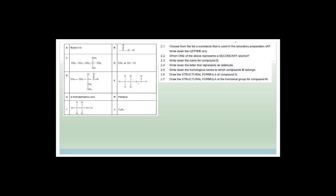Choose from the list a substance that is used in the preparation of F. Write down only the letter. F is an ester — there are two carbons, an O, and a double-bonded OH. We have an ester made up of an alcohol and a carboxylic acid. If we had to name this ester, it would be ethyl methanoate, which means we started off with ethanol and methanoic acid. So we need to look for either ethanol or methanoic acid.